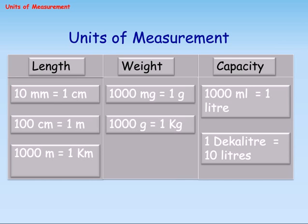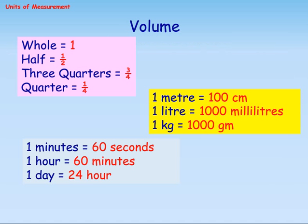Capacity: 1,000 ml equals 1 litre. Volume fractions: Whole equals 1, Half equals 1/2, Three quarters equals 3/4, Quarter equals 1/4.